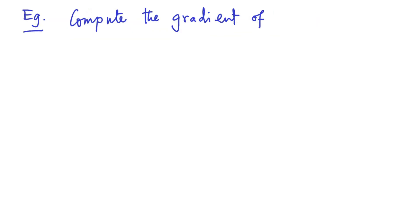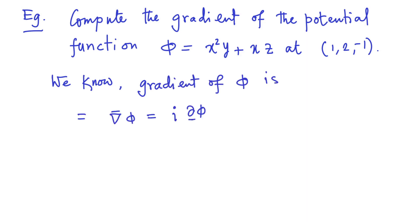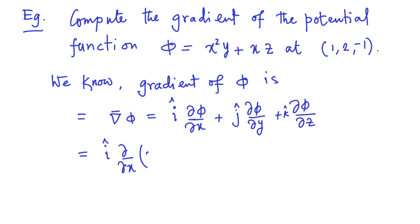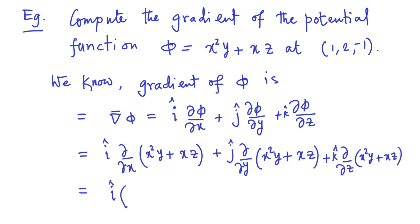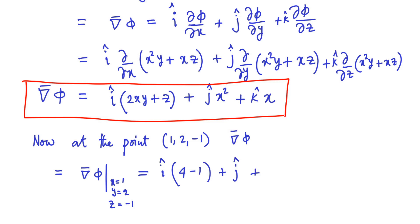Let us now consider an example where we compute the gradient of a potential function, which is a scalar function as given here. We know the gradient of the scalar potential phi can be expressed as i-hat times del phi/del x plus j-hat times del phi/del y plus k-hat times del phi/del z. As you can see, we can explicitly evaluate the gradient of the scalar potential phi to be i-hat times (2xy + z) plus j-hat times x-squared plus k-hat times x. Then at the point (1, 2, -1), the gradient evaluates straightforwardly to 3 times i-hat plus j-hat plus k-hat.